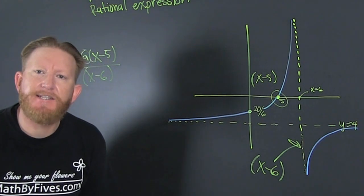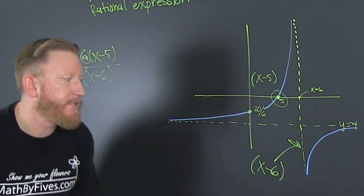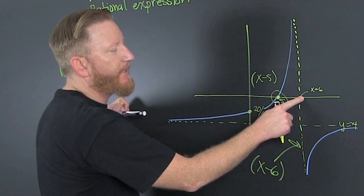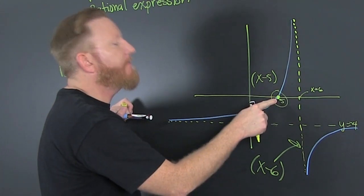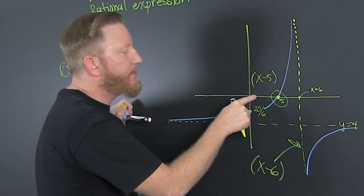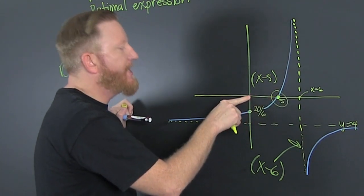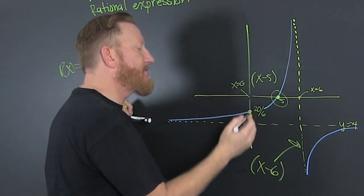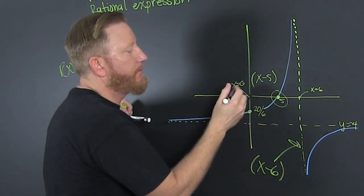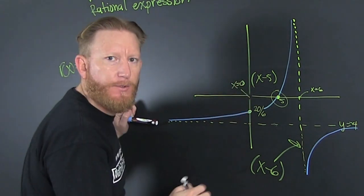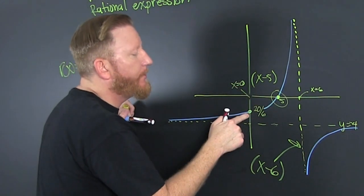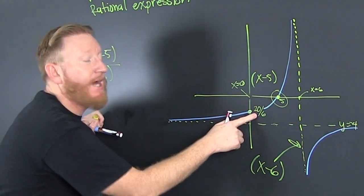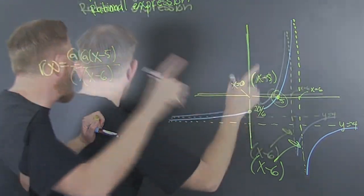What is A going to get us? A is going to get us our y-intercept. Where do y-intercepts happen? When x equals 0. So when x equals 0, you get a y-intercept. And I know that my y-intercept is 26.